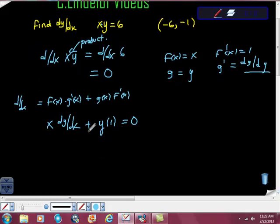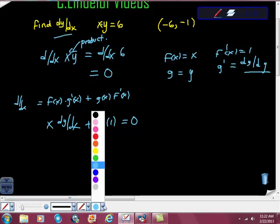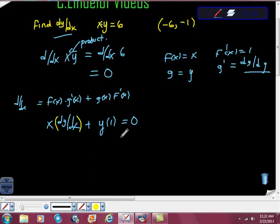Now I'm going to try to separate this out and get dy/dx. My goal is to get this piece by itself. I'm going to add negative y to both sides, which gives me x dy/dx. Then I'm going to divide both sides by x, which gives me dy/dx is equal to negative y over x.